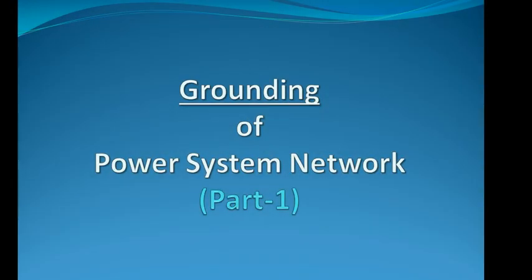Grounding in a power system network is required to discharge fault current during fault conditions. It also helps the protection system — that is, relay and circuit breaker — with the help of a current transformer to sense the fault and protect the electrical system. In this video we will discuss the disadvantages of an ungrounded system, the advantages of a grounded electrical network, and the different methods of grounding practices adopted in modern days.